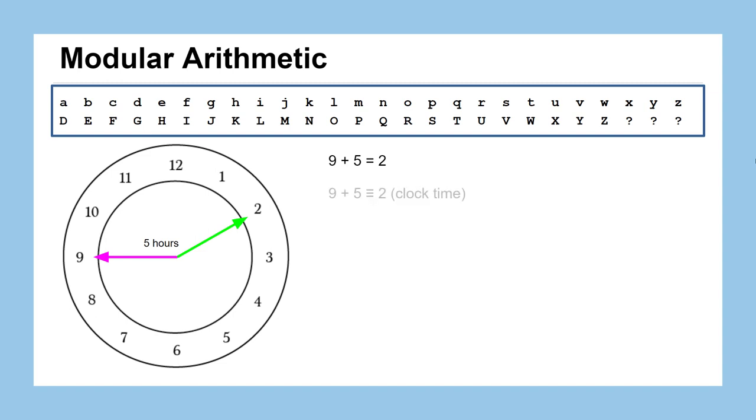So maybe we specify it this way. 9 plus 5 is congruent to 2 or equivalent to 2. And we'll put something there in parentheses to specify why that actually might be true. In this case, we're thinking about it as clock time. So we can say 9 plus 5 is equivalent to 2 when we're talking about clock time.